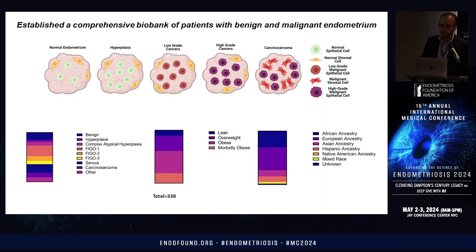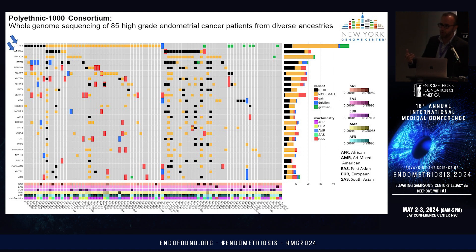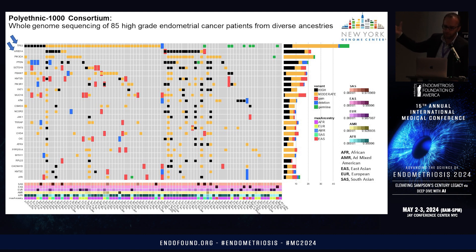We developed a comprehensive biobank of patients with normal-looking endometrium and across the spectrum of endometrial cancer pathology — more than 300 patients. We created a consortium to look at this problem comprehensively and have done whole-genome sequencing of most patients from diverse ancestries. This is very important because there are significant healthcare disparities in endometrial cancer incidence, mortality, and response to therapy, where African American women suffer disproportionately worse. We see common drivers like P53 and ARID1A, but also unique genetic mutations defined from our cohort.